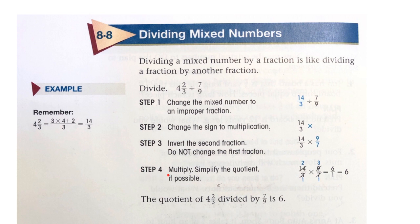Step 4, multiply. Simplify the quotient if possible. Cross cancel, cross cancel.